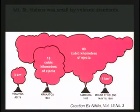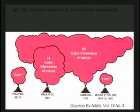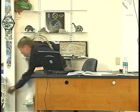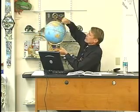Mount St. Helens produced one cubic kilometer of ejecta — the material blown out, including ash and lava. Mount Tambora did 80 cubic kilometers. Mount Krakatoa, in Indonesia near Vietnam, is one of the loudest noises ever on the planet. When it erupted in 1883, it blew the entire mountain away — not just a hole, but the whole mountain is gone. It made a tidal wave that went across the Indian Ocean.